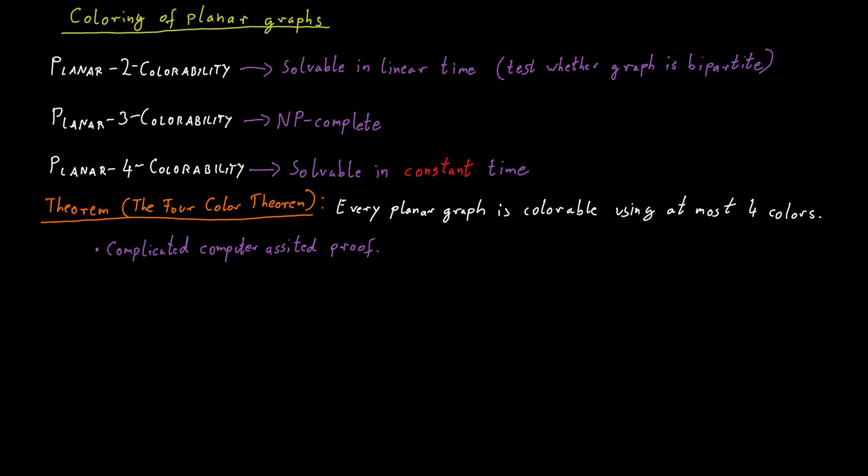In any case, the interesting thing here is that planar two coloring is easy, and planar four coloring is even easier, but planar three coloring is hard. I don't know about you, but my first instinct maybe would be to say, well, the numbers get larger, right? Planar two coloring is easy, planar three coloring is hard, so planar four coloring should be hard as well. But of course, once you start thinking about it a little bit more, it turns out that that might not be true. And in fact, in this case, we know that it's not true. So don't necessarily trust your first instinct immediately. Carefully think about the problems you're dealing with.